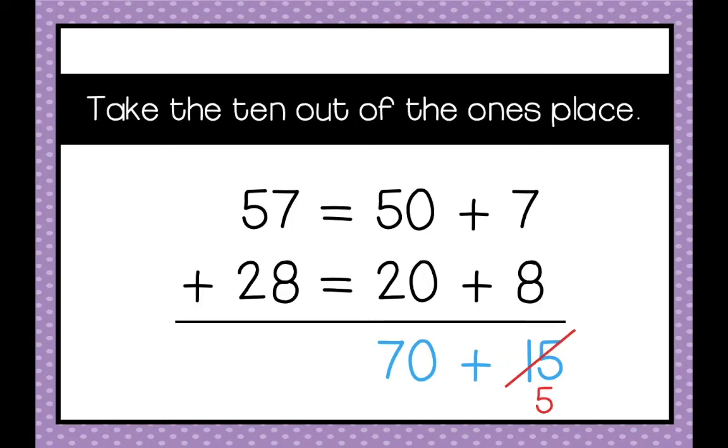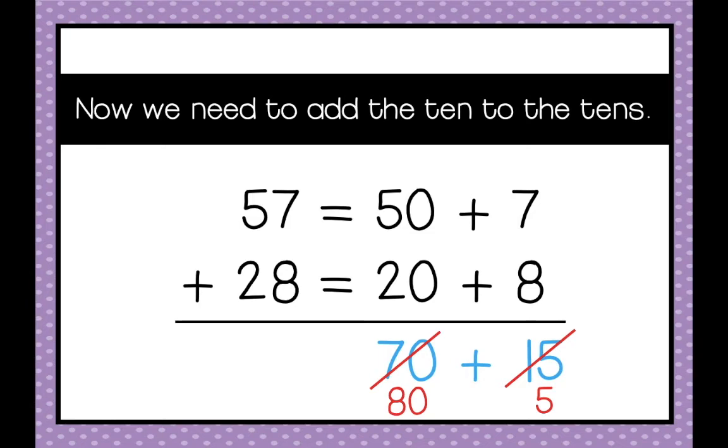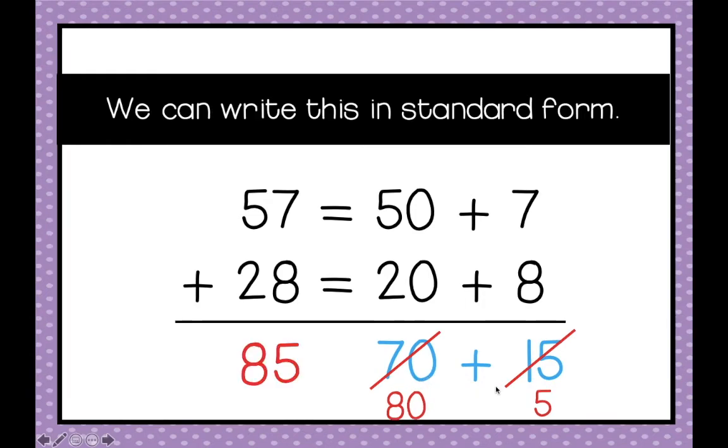So we're going to take a 10 out of the ones place. We're left with 5. We're going to add that 10 that we just took out of the ones place to the tens place because it's actually a 10. 70 plus 10 is 80. Now we can write 80 plus 5 which is the expanded form in standard form which is 85.